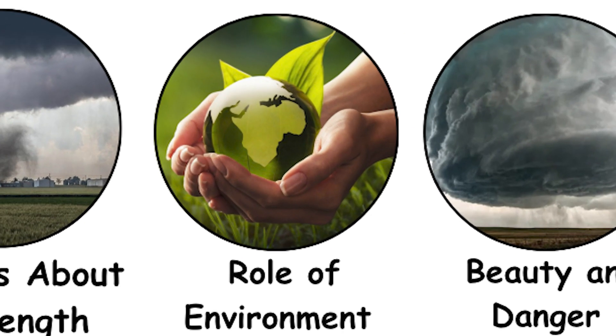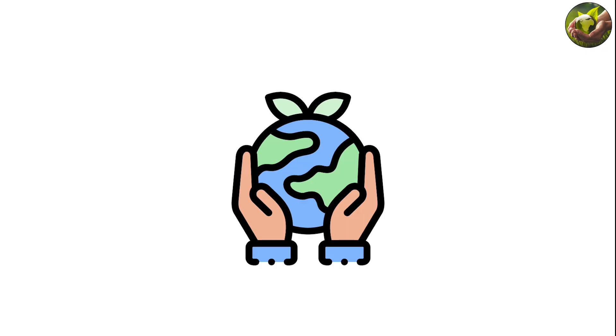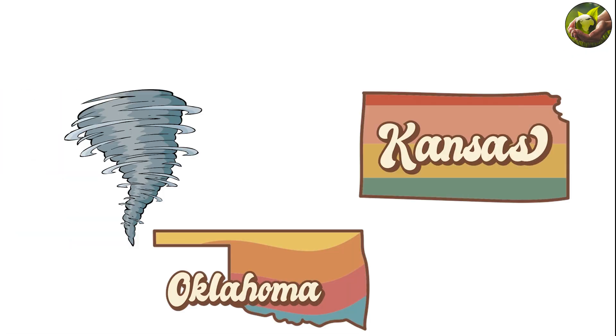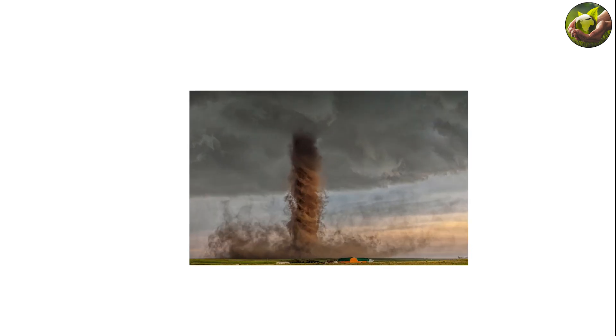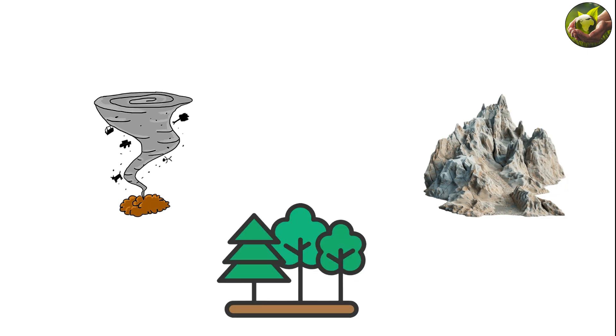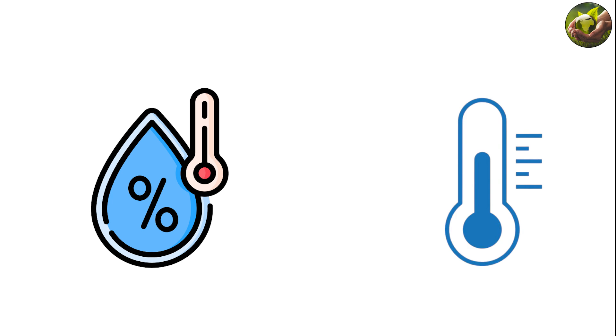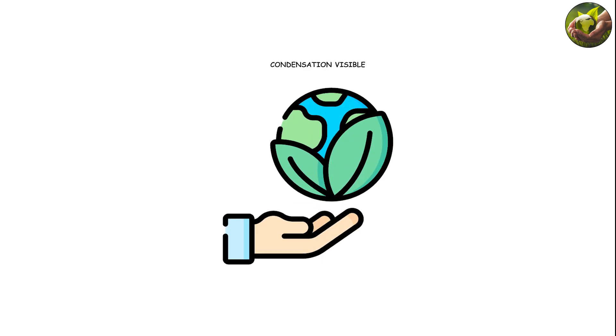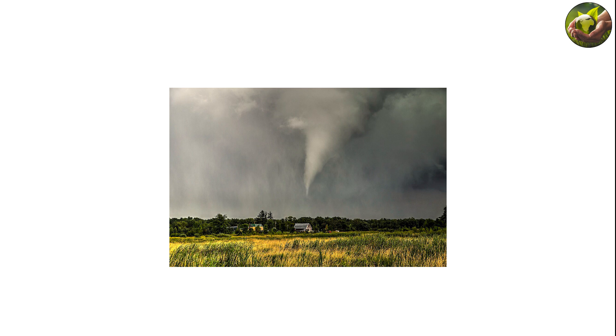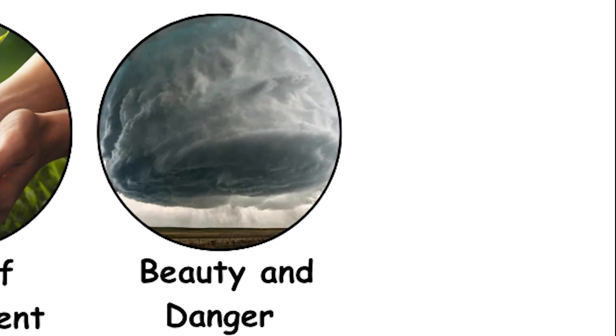The role of environment and terrain. The local environment plays a big role too. Tornadoes over flat plains like in Kansas or Oklahoma often have clean, full shapes since the airflow is unobstructed. In contrast, tornadoes forming in hilly or forested areas can have distorted funnels as the terrain disrupts the inflow. Humidity and temperature also affect visibility — a moist environment makes condensation visible, while drier air can hide the funnel even when violent winds are present.